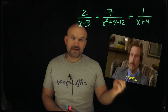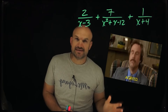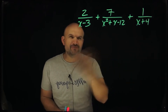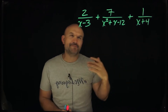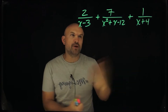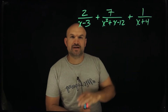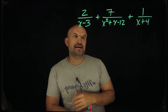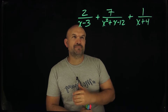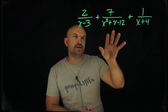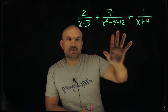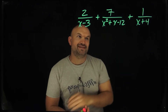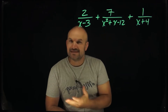Finding the least common denominator is probably one of the most sometimes confusing parts of adding and subtracting rational expressions, because it's an extra step. A lot of times that extra step doesn't really make much sense when we're dealing with fractions that have variables in them — polynomials and stuff like that. It can sometimes get confusing.